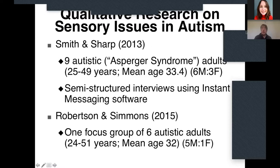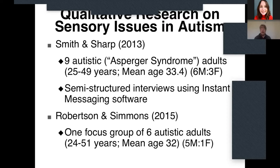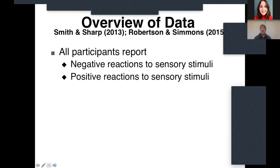In Smith and Sharp's study, they interviewed nine autistic adults with an Asperger's diagnosis, mean age 33, ranging from the 20s to late 40s — majority male but with three females — using semi-structured interviews and instant messaging software. In our case, we had one focus group of six autistic adults, five of whom were male, with a similar average age. I'm concentrating on the adult presentation as most relevant for this audience. Overall, all participants reported both negative and positive reactions to sensory stimuli — I emphasise you get positive as well as negative.